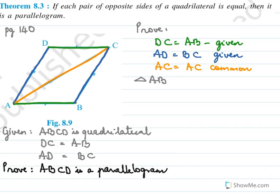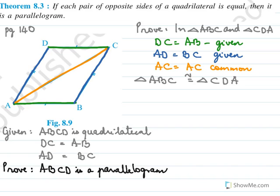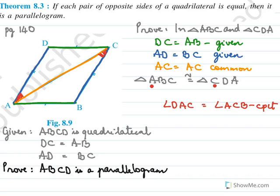Triangles ABC and CDA are congruent. Now their corresponding angles must be equal. The A of one triangle equals the C of the other. So angle DAC equals angle ACB by CPCT. But these are alternate angles.